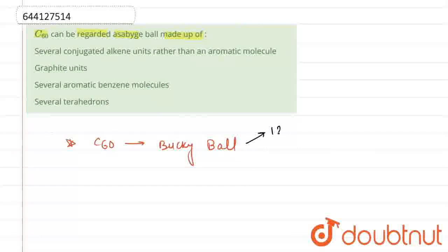we know that it consists of 12 five-membered rings and 20 six-membered rings.